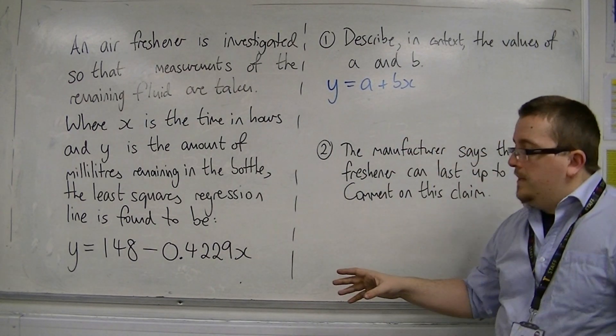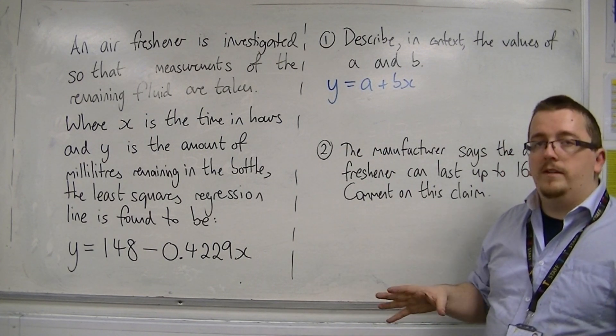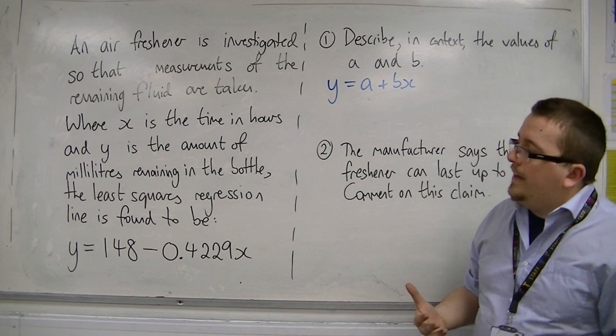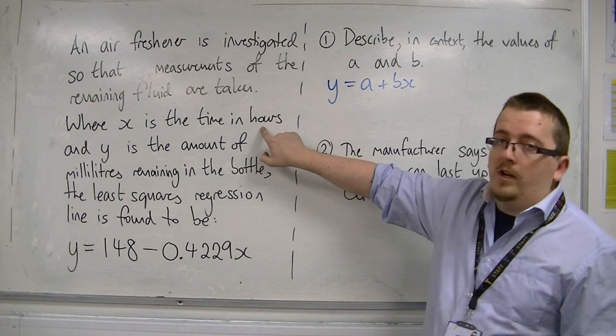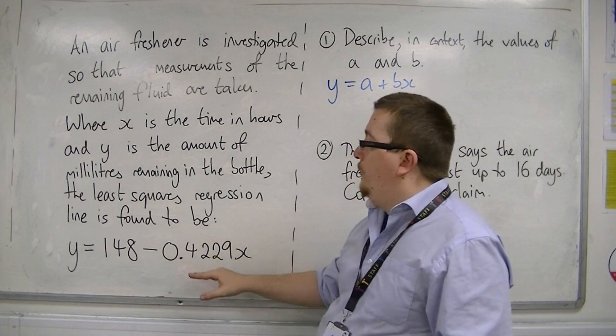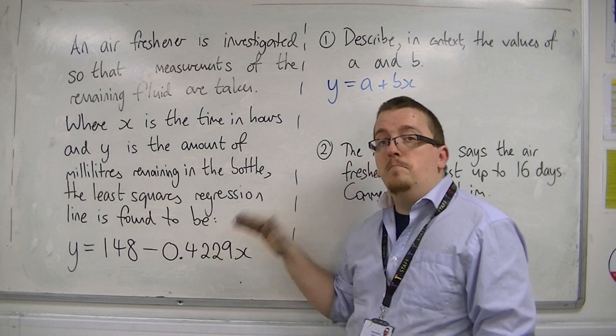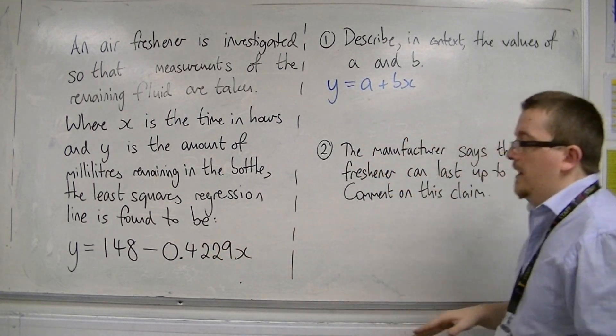As for b, this value of -0.4229, what that is saying is that for every hour the bottle loses 0.4229 milliliters of fluid.